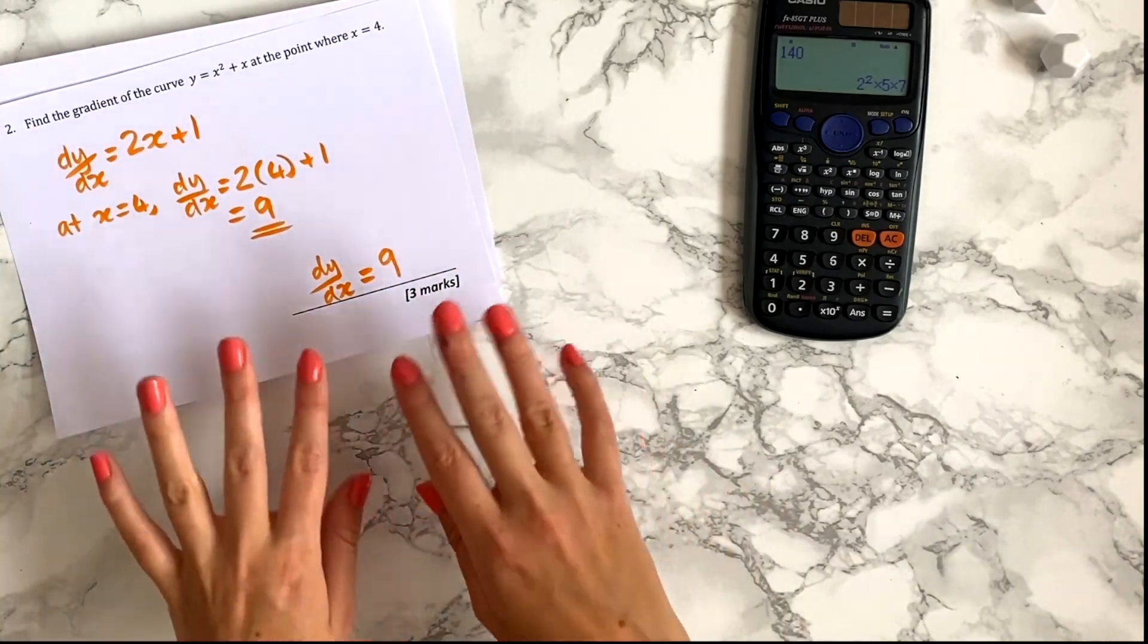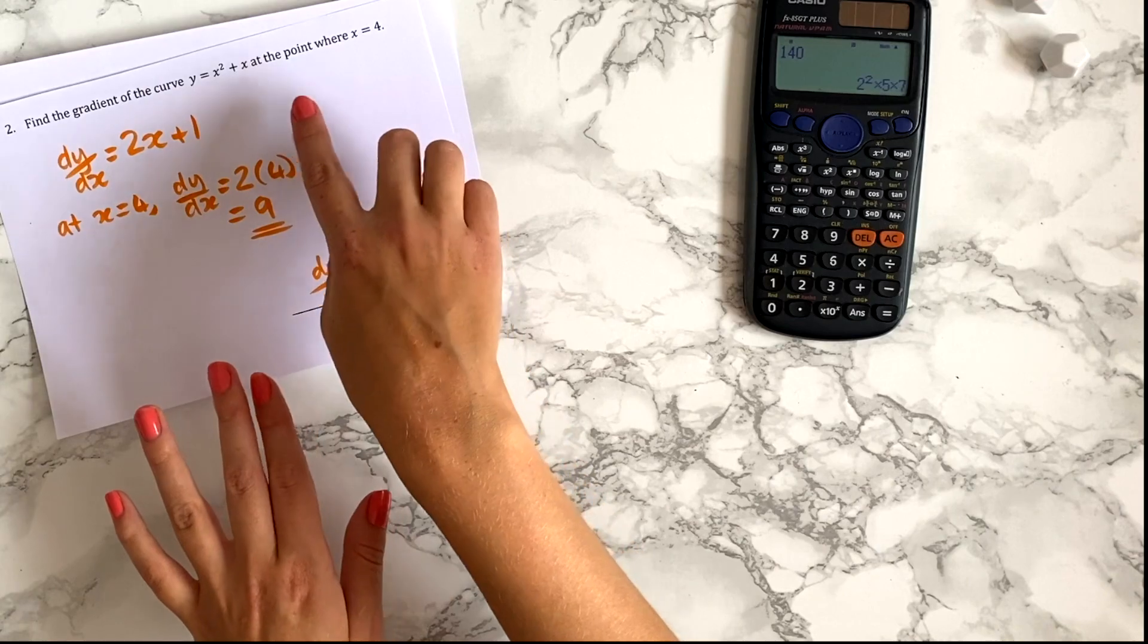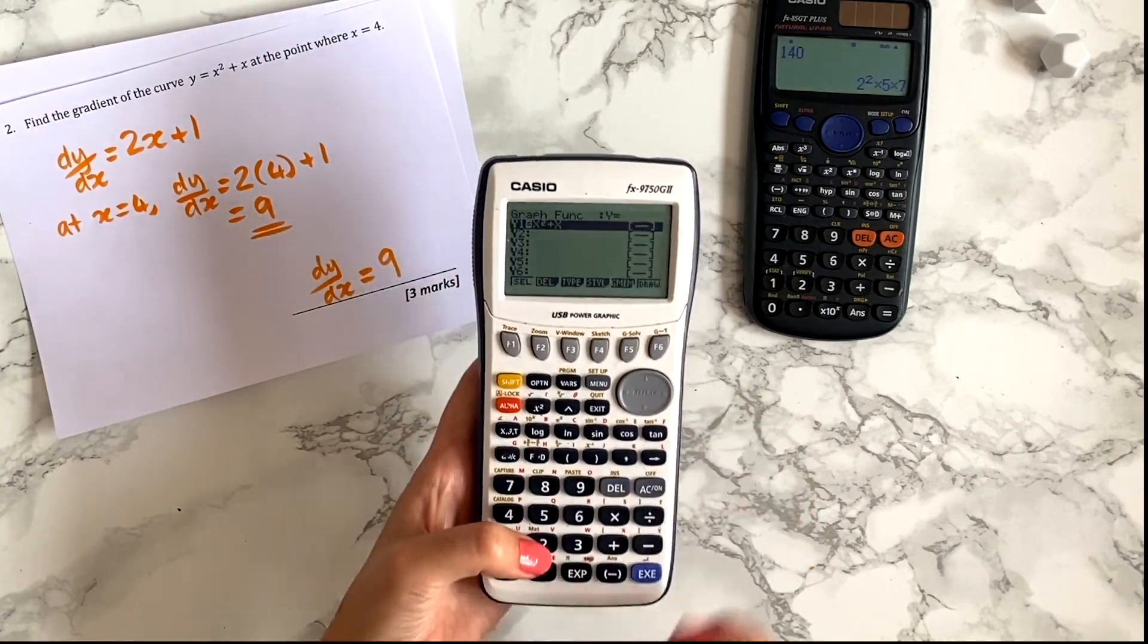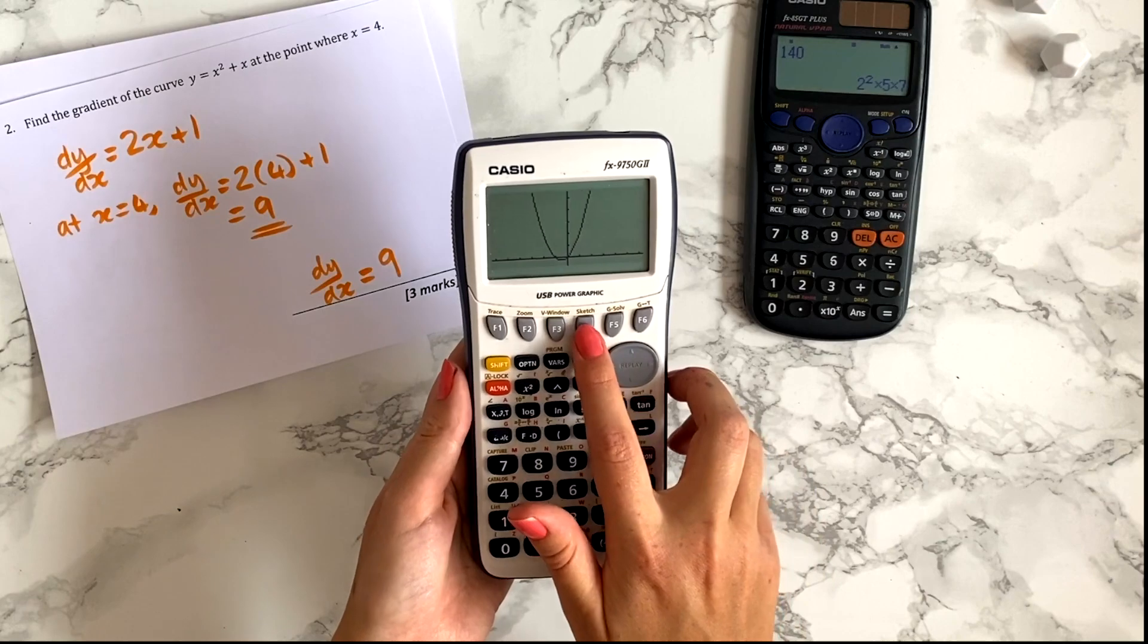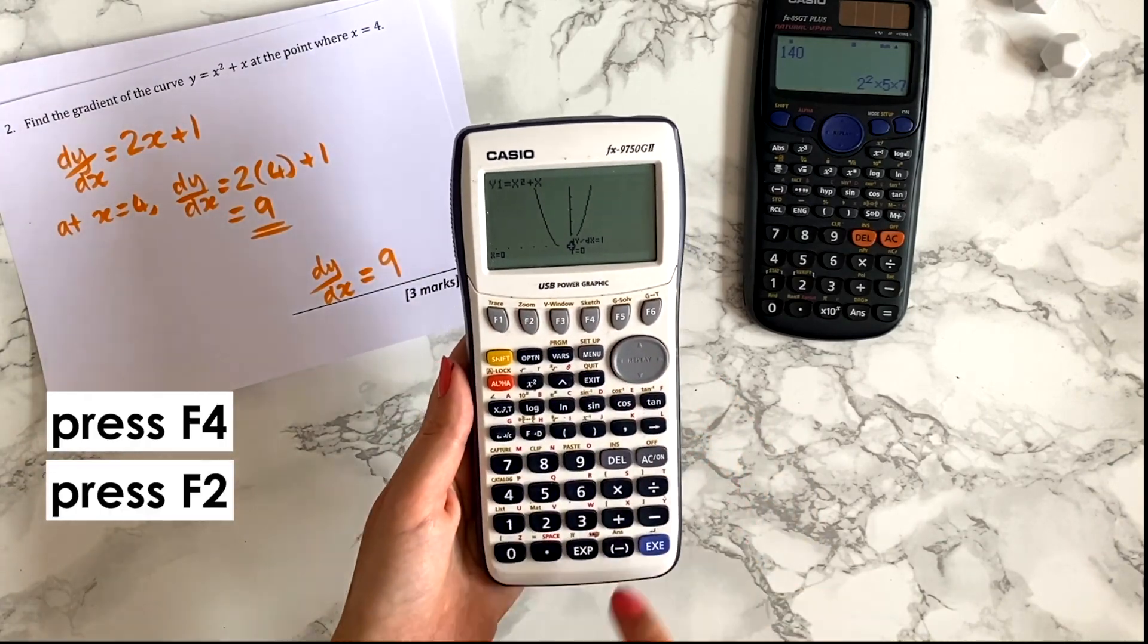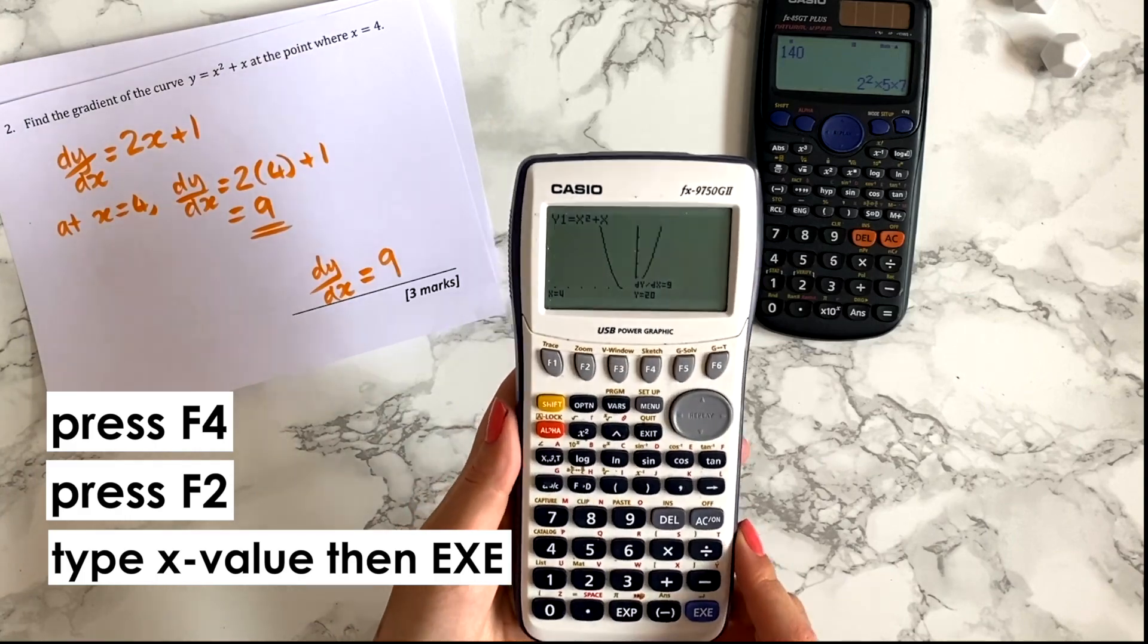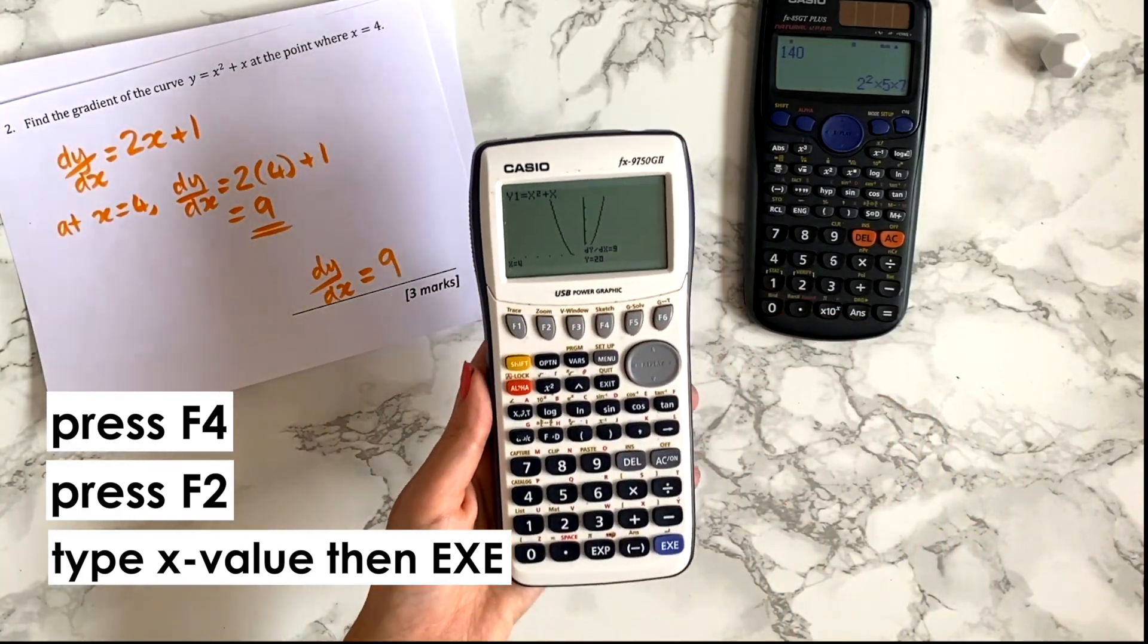Or if you're doing A-levels your calculator probably gives you the gradient of any curve at any point. So for instance say I need to find the gradient of this curve at the point where x equals 4. On my calculator once I've drawn the graph I can press F4 and then F2 and then type in the value of x where I want the gradient. So I type in 4 and press execute and there it tells me that dy by dx equals 9 which is what I found.